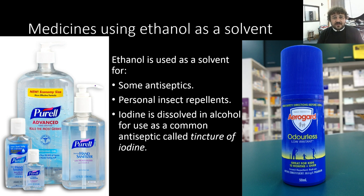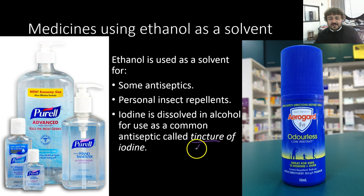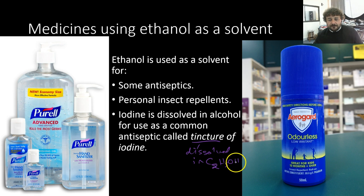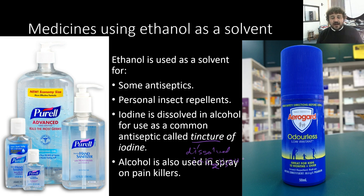And iodine — we dissolve iodine in alcohol to make something called tincture of iodine. A tincture is something dissolved in alcohol, or in particular, ethanol. Ethanol is also used in spray-on painkillers, like Stingos and that sort of stuff.